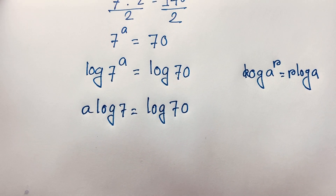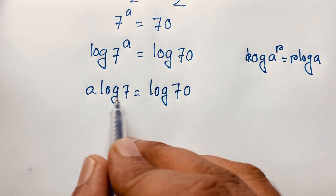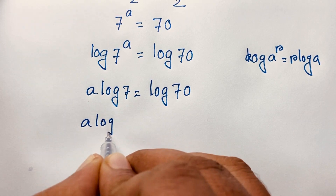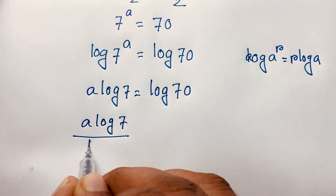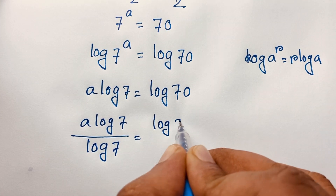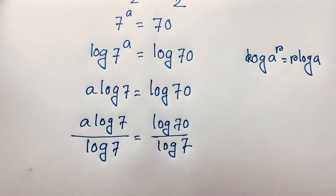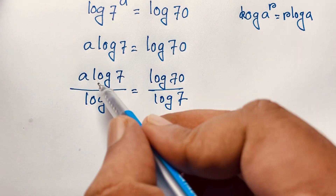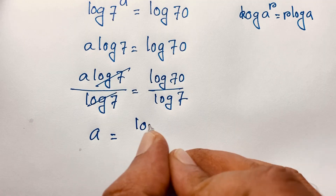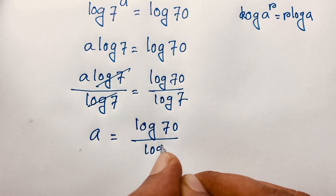Now I can see here is log 7, so I divide both sides by log 7. So a log 7 divided by log 7 is equal to log 70 divided by log 7. The log 7 terms cancel out, and we find that a is equal to log 70 over log 7.